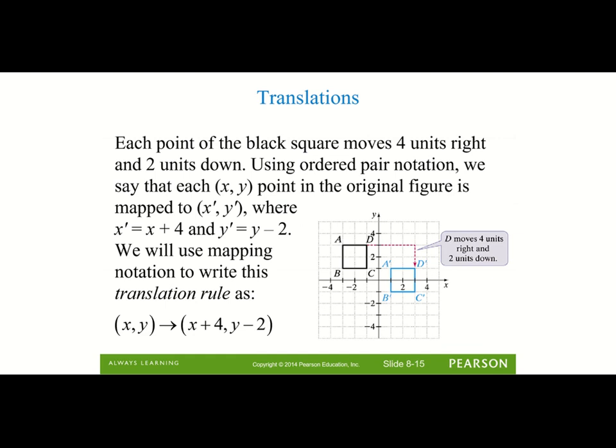When looking to describe a translation, we use an ordered pair, using either addition or subtraction to show movement left and right, then up and down. We always start with the original ordered pair (x, y). Whatever the figure moved left or right is added or subtracted to the x value: moving right we add, moving left we subtract. If it goes up we add to the y value; if it goes down we subtract from the y value.